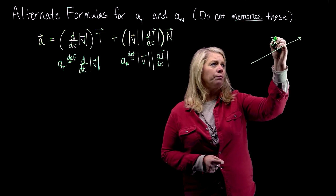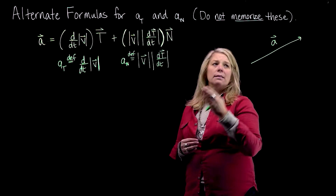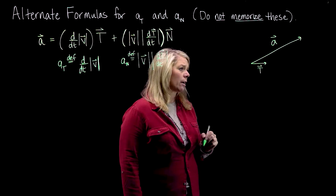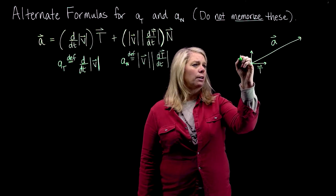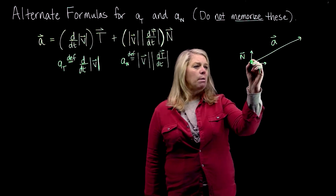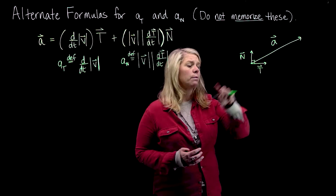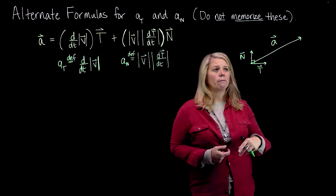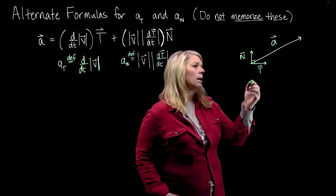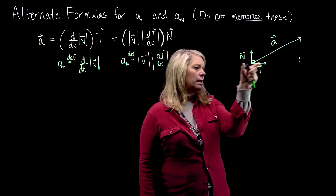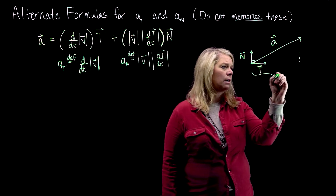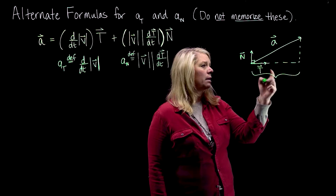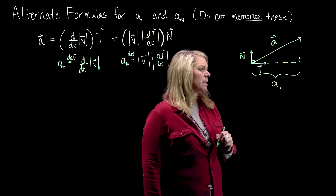So I have some acceleration vector. What this says is that I can decompose that acceleration vector into how much is along the unit tangent vector — calling this one unit of length — and how much is along the unit normal vector. The unit tangent and unit normal vectors are perpendicular to each other, so we have a right triangle. This distance along the tangent direction is our A sub T, the tangential component of acceleration.